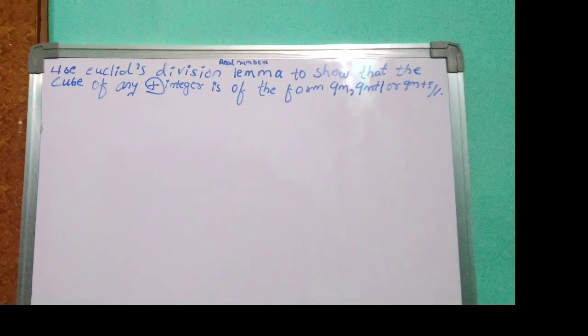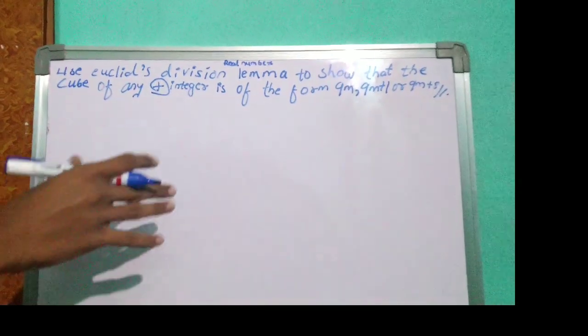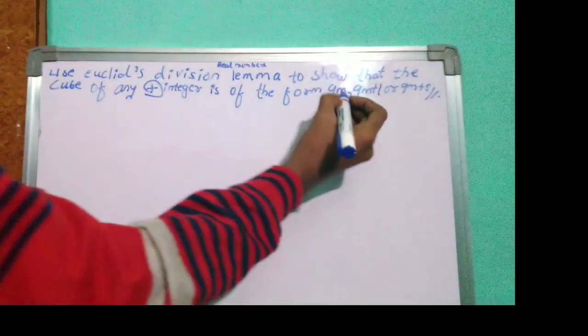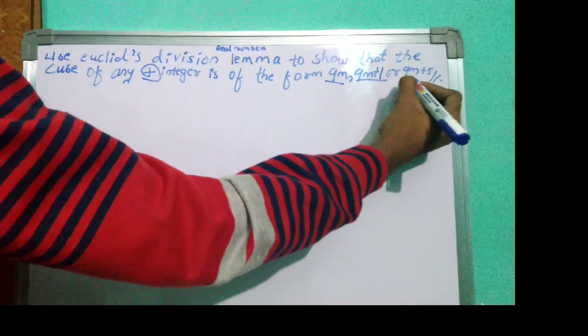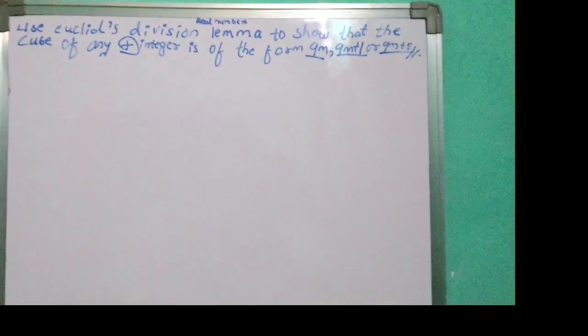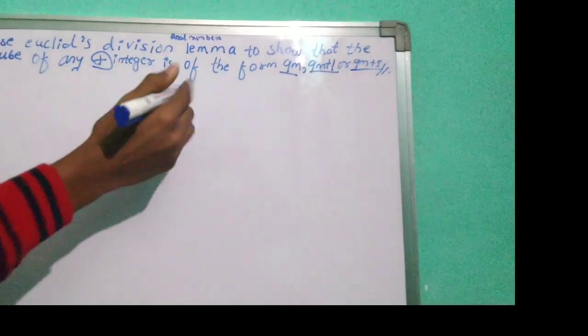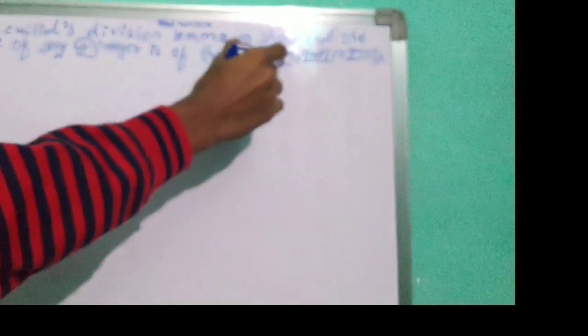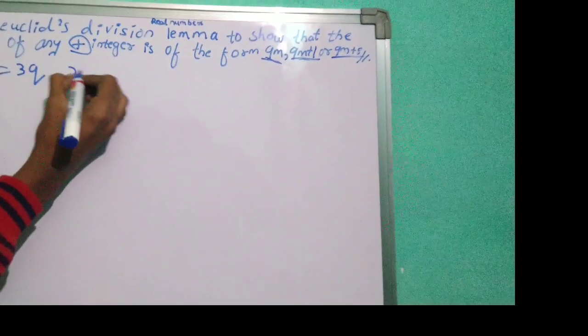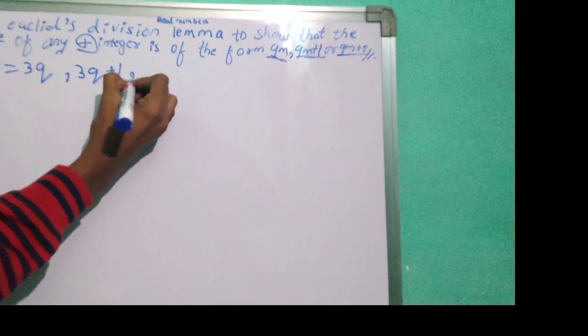So here, the question is to prove that any cube is of the form 9m, 9m plus 1, or 9m plus 8. To prove this, we can take a equal to 3q, or 3q plus 1, or 3q plus 2.